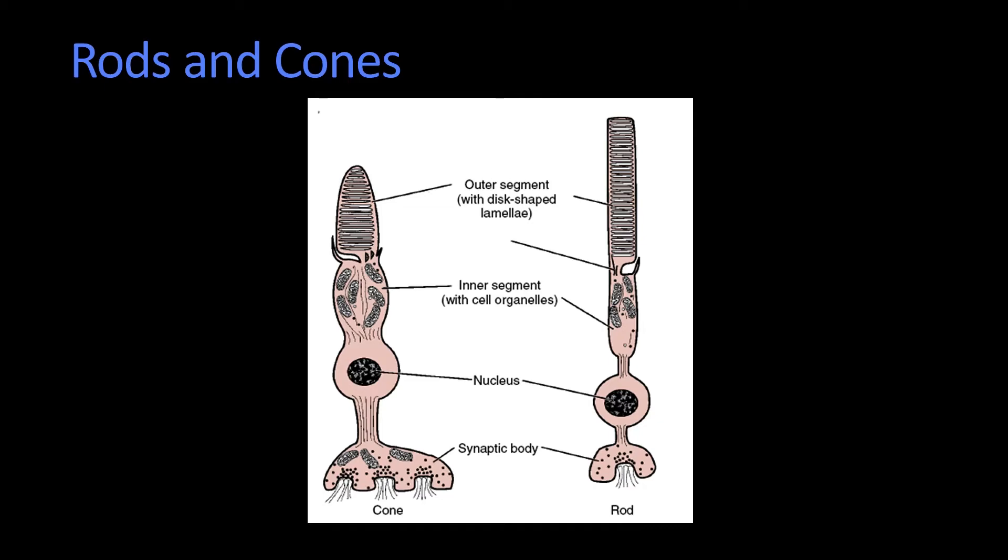So let's take a little bit closer look at rods and cones. They have a certain similar structure. They have this outer part. But remember, the pigment epithelium is up here and the light comes in that way. But this is called the outer part because it's this inverted retina thing, right?